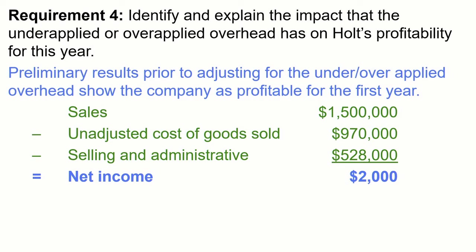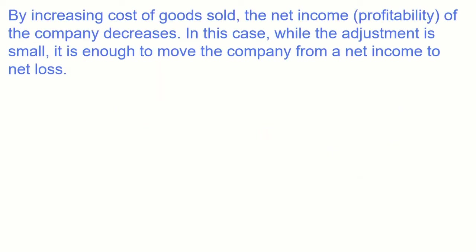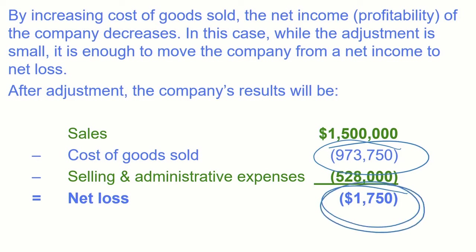We have $3,750 of underapplied overhead. Closing it directly to cost of goods sold will increase cost of goods sold and the closing entry will credit manufacturing overhead. By increasing cost of goods sold, net income decreases. While the adjustment is small, it is enough to move the company from a net income to a net loss. Cost of goods sold is now $973,750, making the result a net loss — a qualitatively significant outcome from just $3,750.